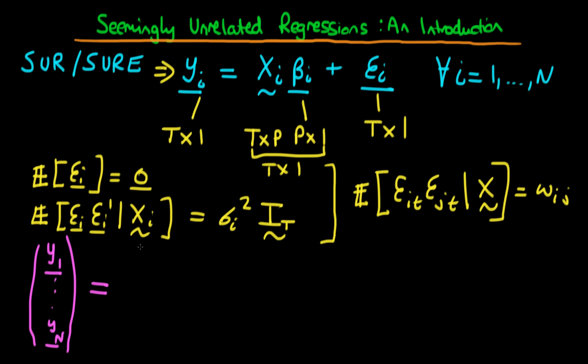And we could say that this is equal to, then we have a matrix, where this matrix has diagonal components X1, X2, through to Xn.